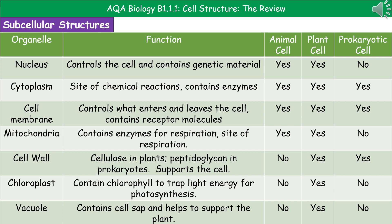The cell wall is made of different materials. It is not present in animal cells at all. Comparing the cell wall found in plant cells and prokaryotic cells, there is a difference in the material used: in plants it's a cellulose cell wall, whereas in prokaryotic cells it's a peptidoglycan cell wall. Its function is simply to support the cell. Chloroplasts contain chlorophyll, which is a green pigment used to trap the light energy needed for photosynthesis — found only in plant cells. The vacuole, also only in plant cells, contains cell sap and helps support the plant.